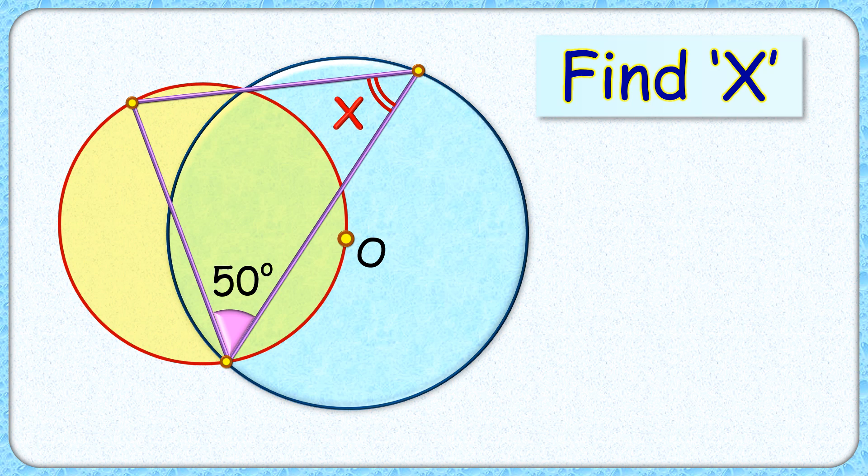This interesting question gives us two circles. The yellow circle passes through the center of the blue circle. A line segment passes through the common point of contact and sustains an angle of 50 degrees at the second point of contact. The question is to find this angle, or the value of x.